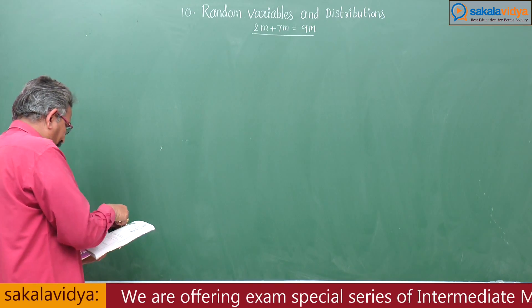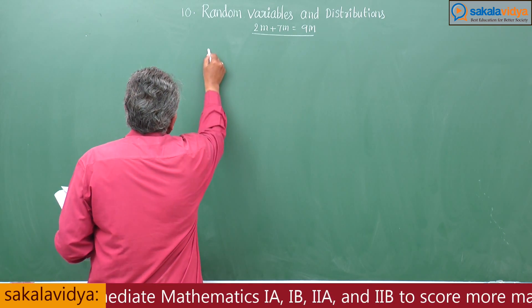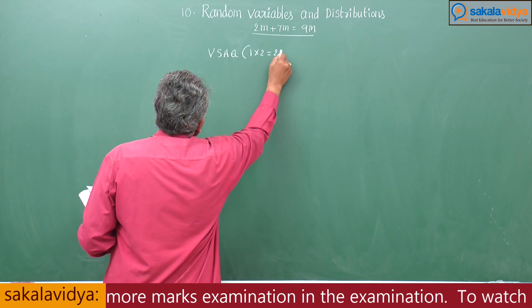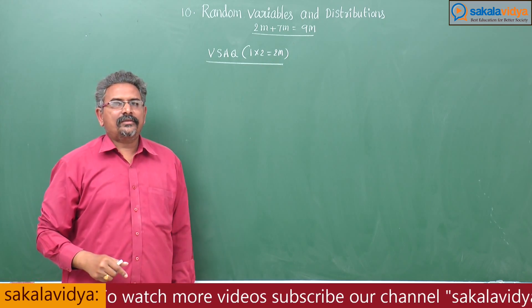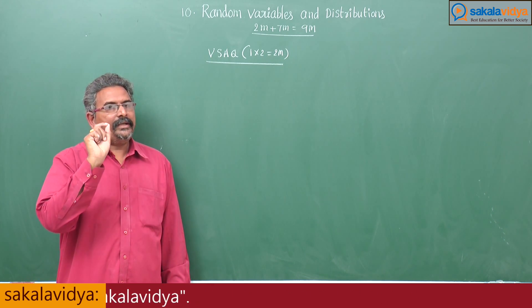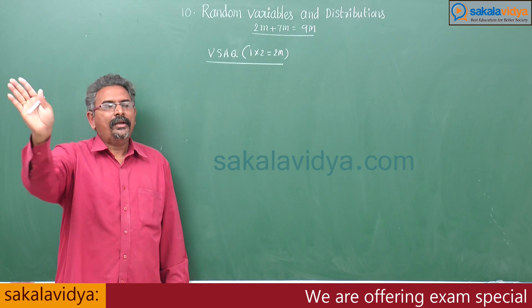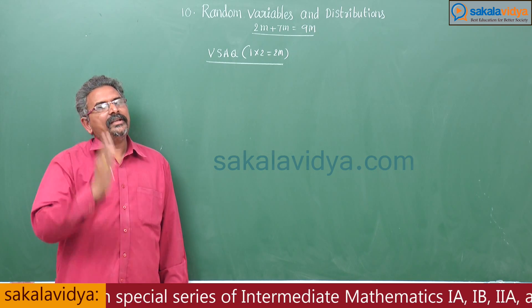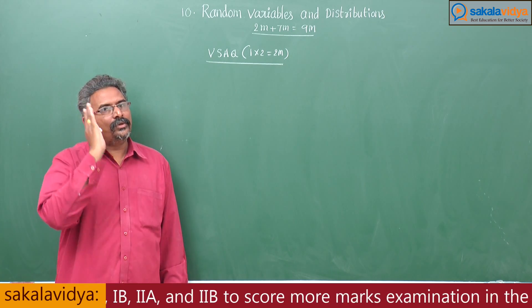The first problem is a very short answer type question — VSAQ type — worth 2 marks. You definitely have to attempt the very short answer questions because there is no choice in very short answer type. So you have to practice more very short answer type questions from your textbook questions or other references in order to score full marks out of 75.